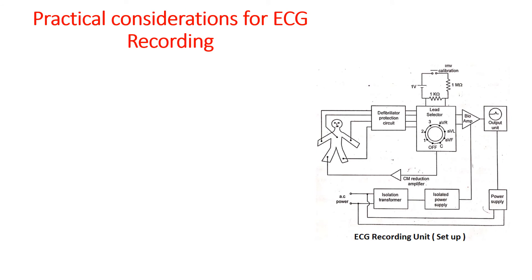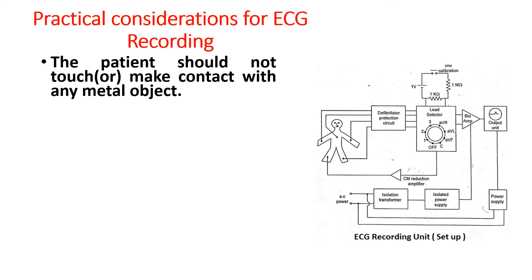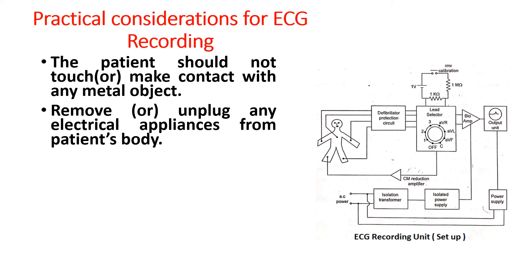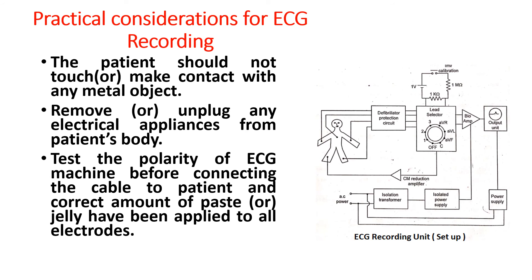Now we will discuss about the practical considerations for ECG recording. Before recording ECG, the operator should check that the patient does not touch or make contact with any metal object. Remove or unplug any electrical appliances from the patient's body. Test the polarity of the ECG machine before connecting the cable to the patient, and ensure the correct amount of paste or jelly has been applied to all electrodes.